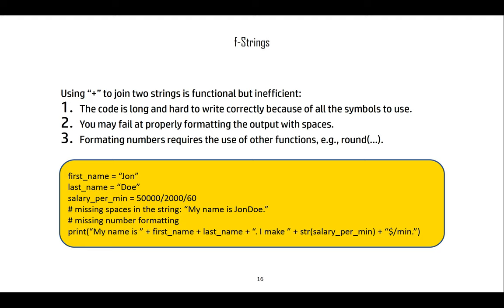There is a more practical way of providing output to the user: using f-strings, or formatted strings, in Python. Using plus to join two strings is functional but inefficient. The code becomes long and hard to write correctly because of all the symbols involved — quotation marks, plus symbols, variables — and it's easy to forget things. Conversions are also needed, and numbers require their own formatting functions such as rounding.